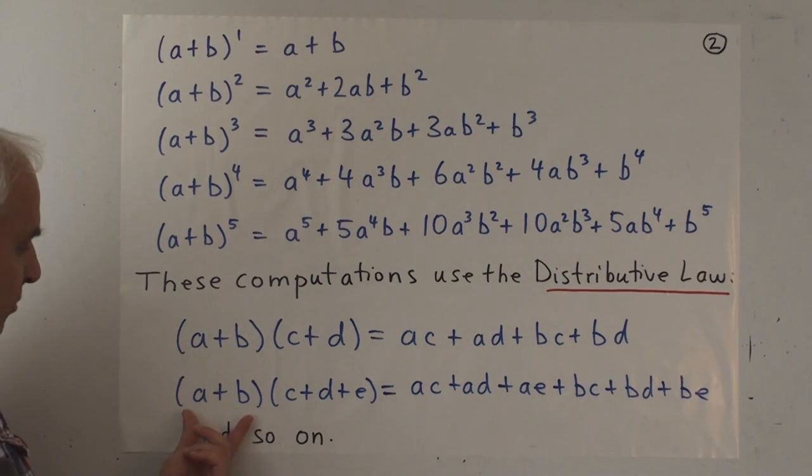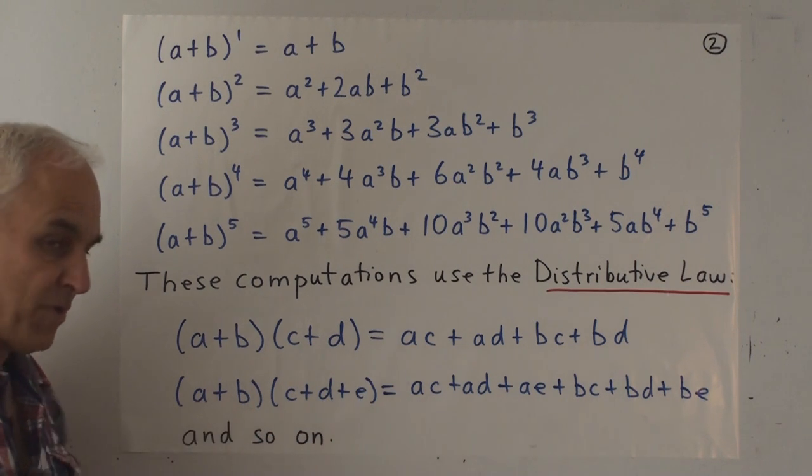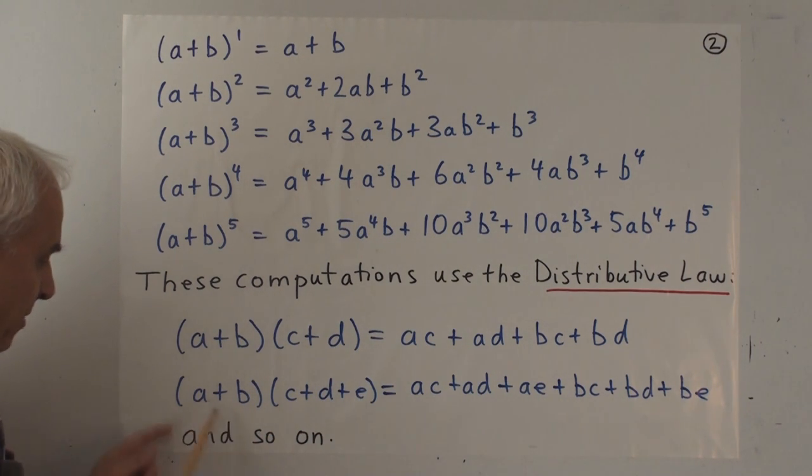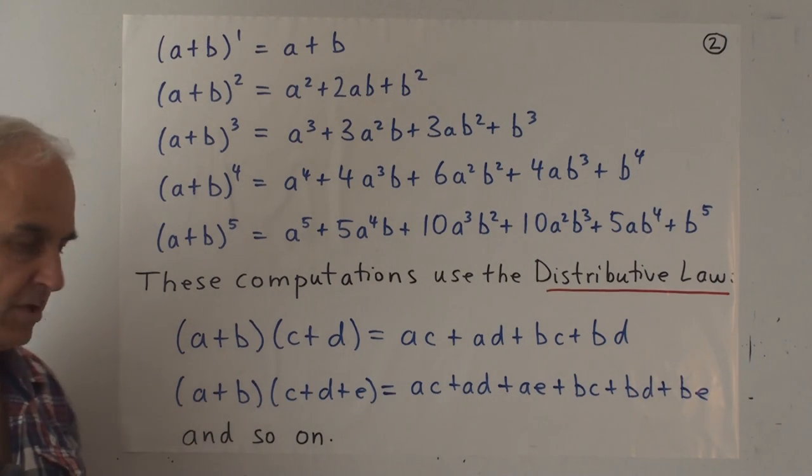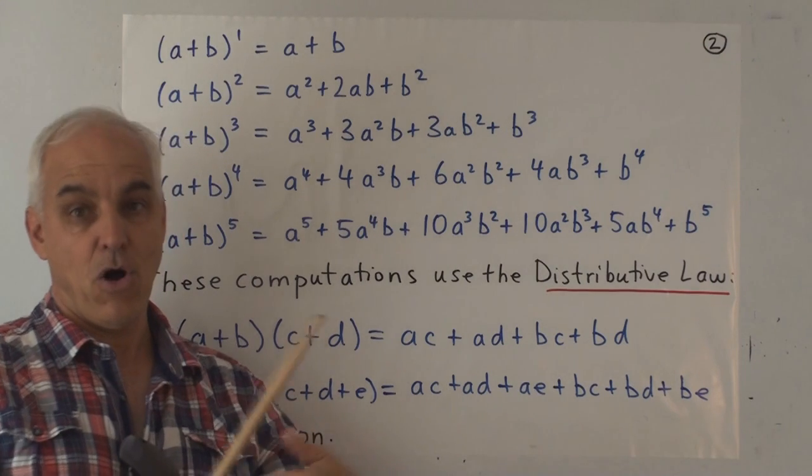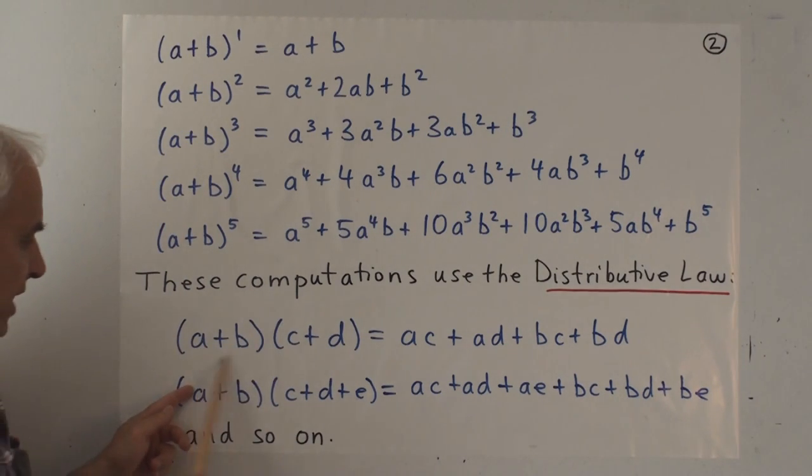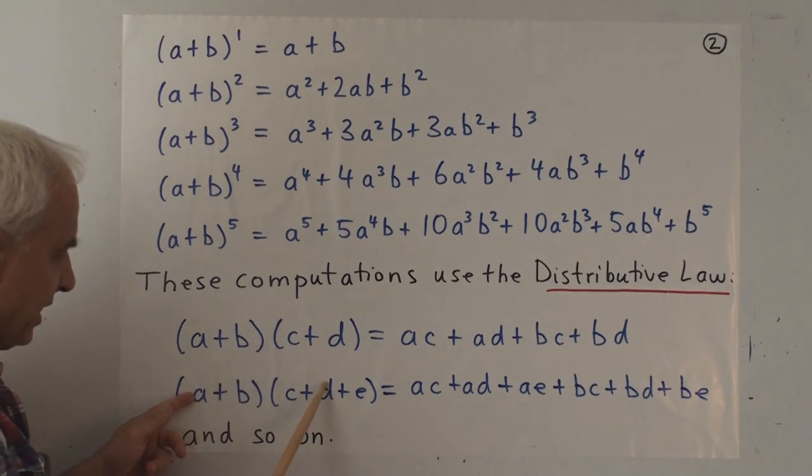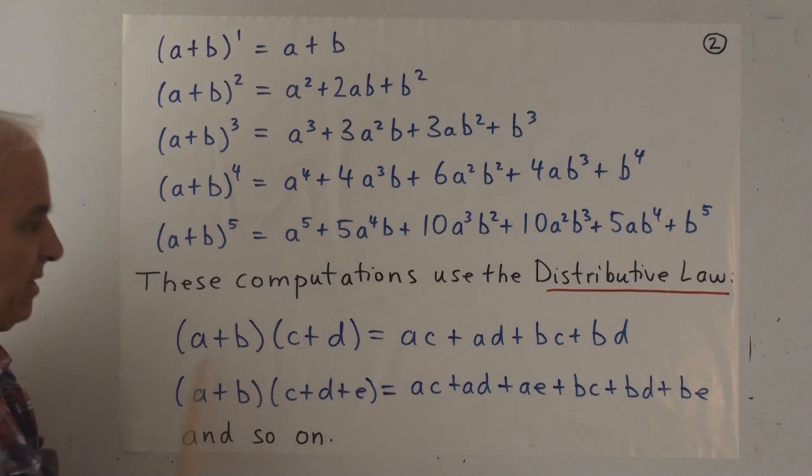If you're multiplying something a little bit more complicated, like a plus b times c plus d plus e, you have to go through the same motions. You have to multiply each of the ones in this term with each of the ones in this term. So all together there will be 2 times 3 different products all added up. So a times c plus a times d plus a times e plus b times c plus b times d plus b times e. And of course we can continue this for larger expansions.